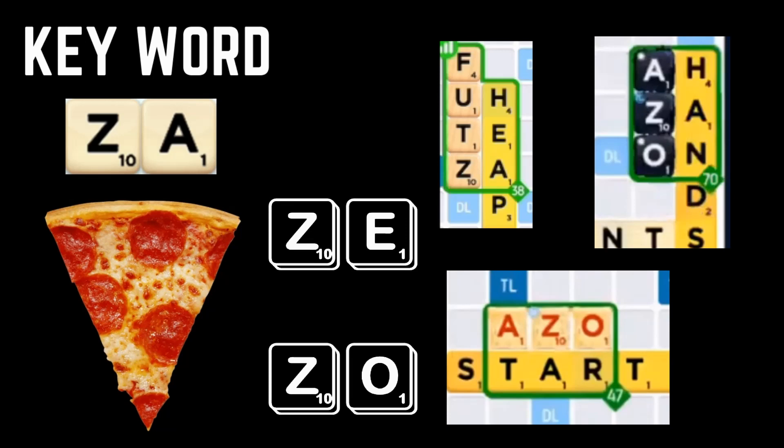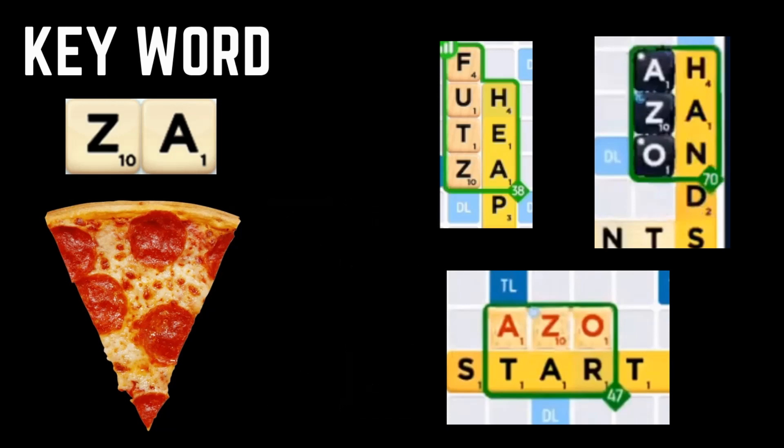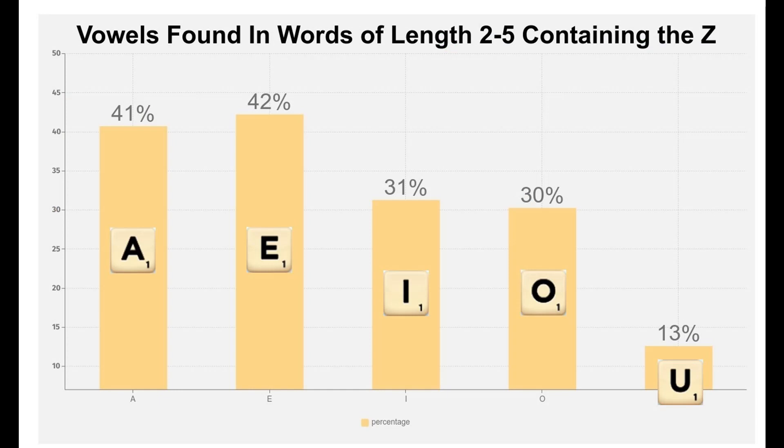But the synergy between the Z and the A goes further than just a quick slice of za. You can see that among this set of short to mid-length Z words, 41% also contain an A, almost as many as contain an E.